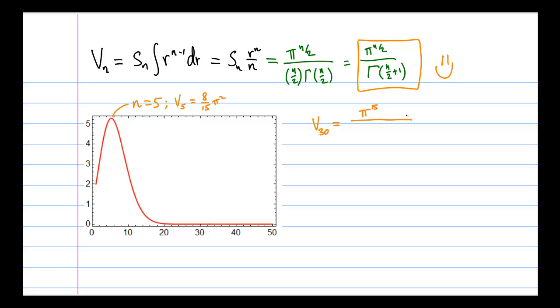So in particular, the volume of a 30-dimensional sphere is pi to the fifth divided by a bazillion. Actually, by a trillion, but it doesn't really make a difference, because it's very, very small.